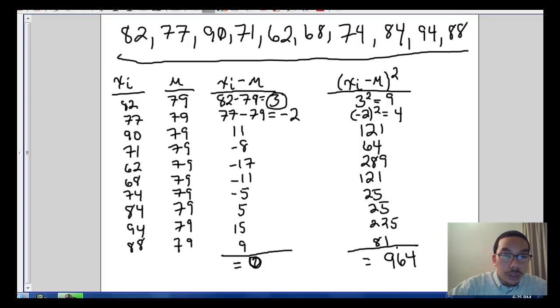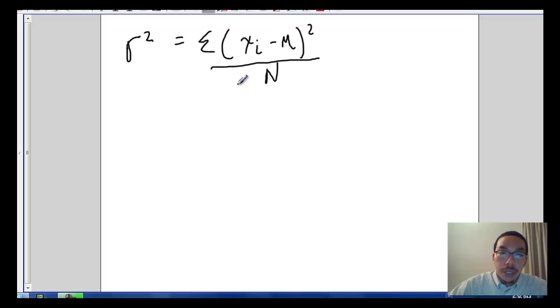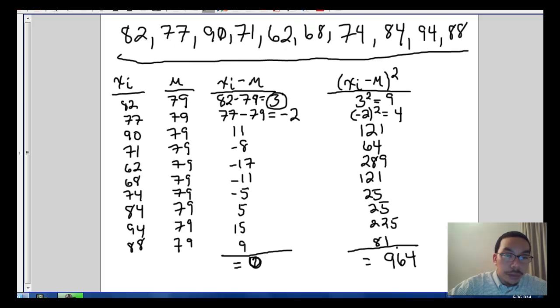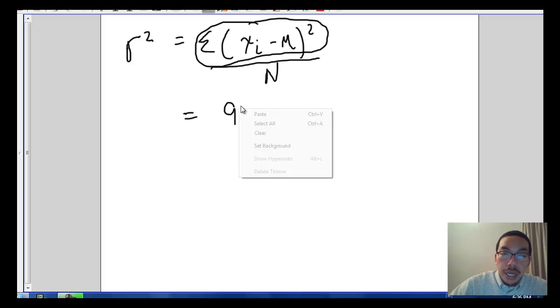Let's go to another page. So let's bring the formula back. We said the formula was sigma squared equals the sum of x sub i minus mu squared over n. Well, we calculated this already. And if we look at our previous page, the sum of all these squared deviations is 964.